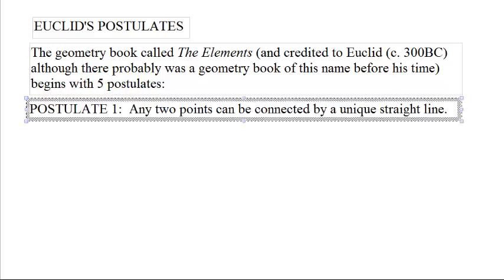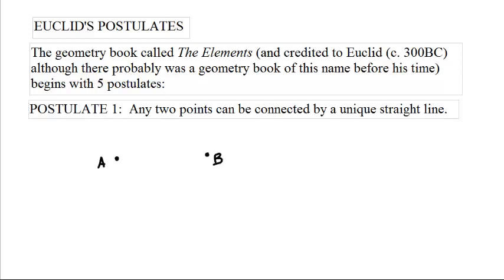Postulate 1: Any two points can be connected by a unique straight line. If you've got points A and B, you can connect them with a line, and there's only one line directly in between. There isn't another way of getting from A to B that's a straight line.